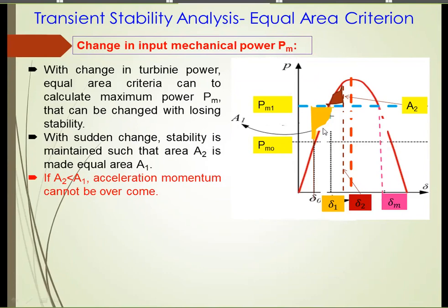For the case shown, we have a large change in turbine mechanical power. The initial operating point was at delta_0, and the new operating point is near delta_1. The rotor angle crosses this point and reaches delta_2. The rotor then swings back and forth. In this case, Area 2 is defined by one region and Area 1 by another, and Area 2 is less than Area 1.